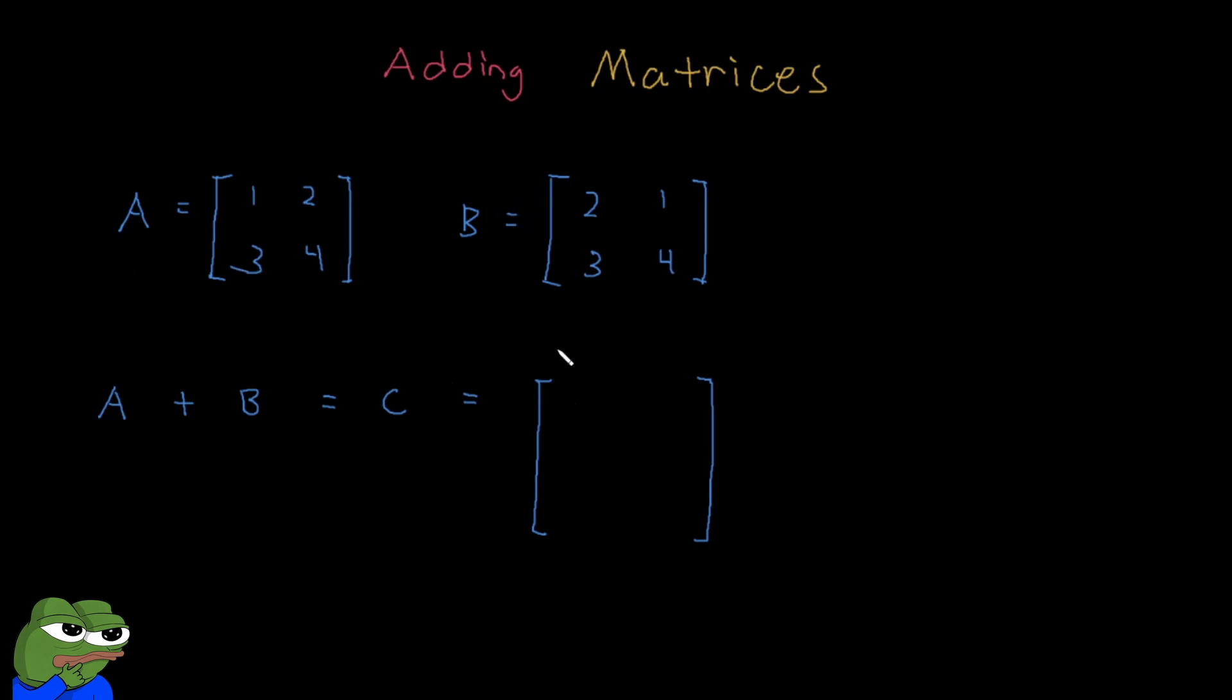So let's start. How we add matrices is we simply add each element together. So for example, first, let's add the top left or the A11 element with the top left of B or the B11 element to make 3. We continue on with all other numbers and we get 2 plus 1, so 2 plus 1 is also 3.